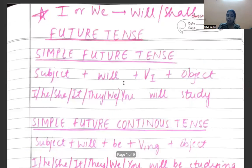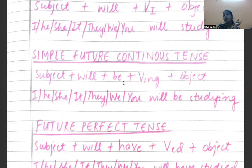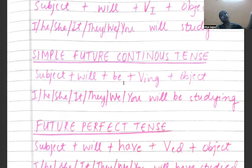The future continuous tense — we are going to use it when, for example, you say to me that someone will come to me at 6 o'clock tomorrow. So I will say that when you meet me, I will be studying. That means when you are coming, I am studying at that time.